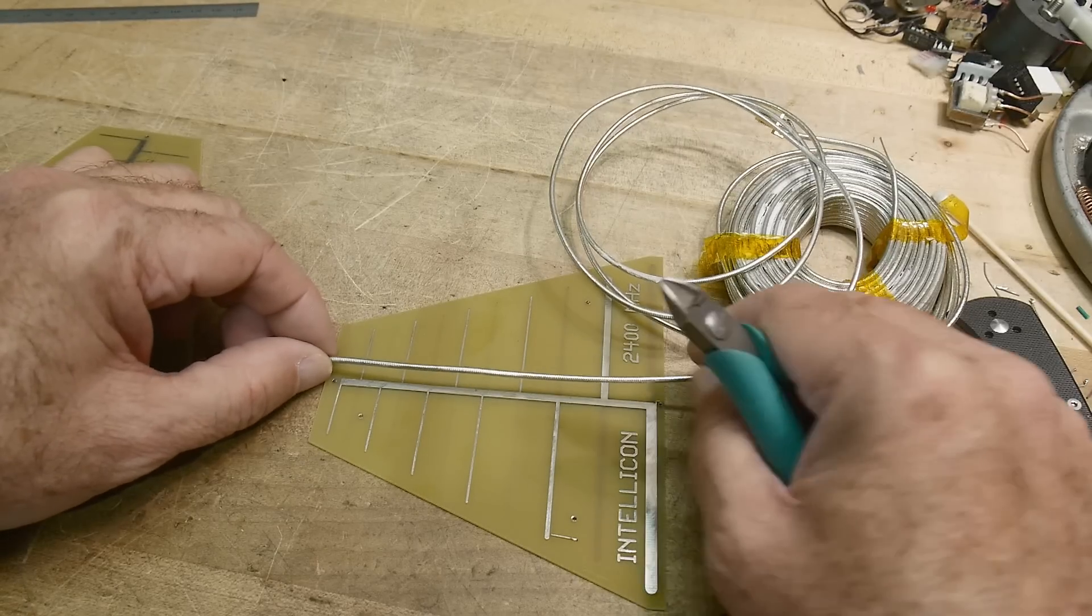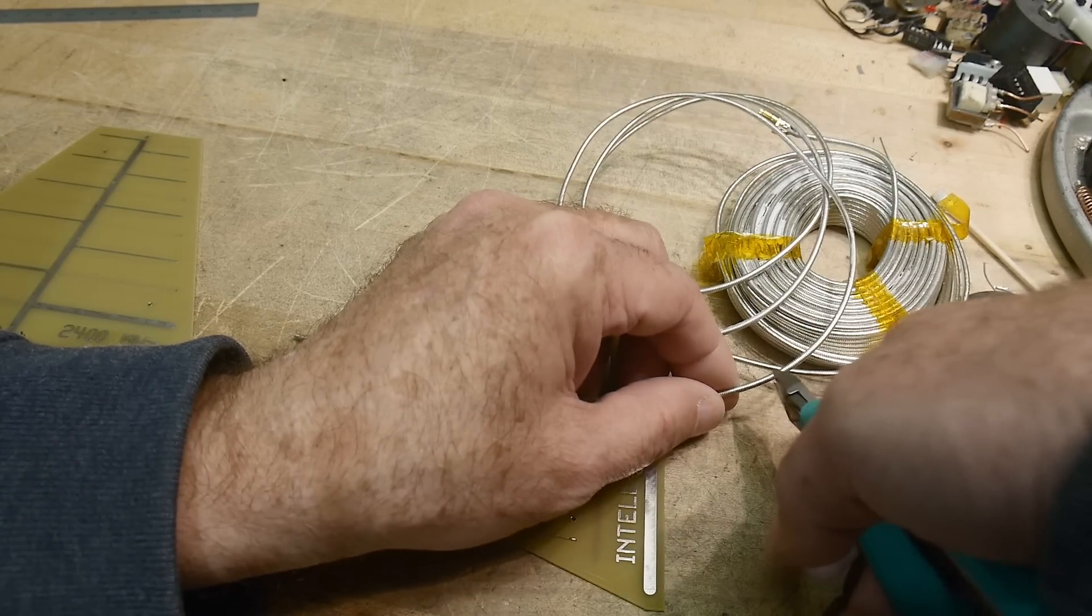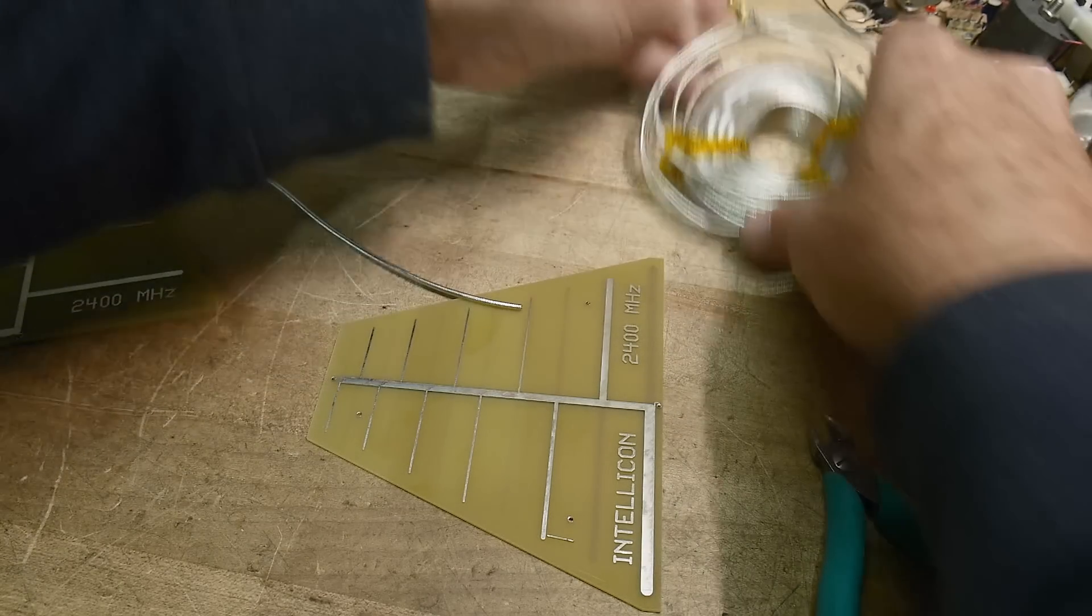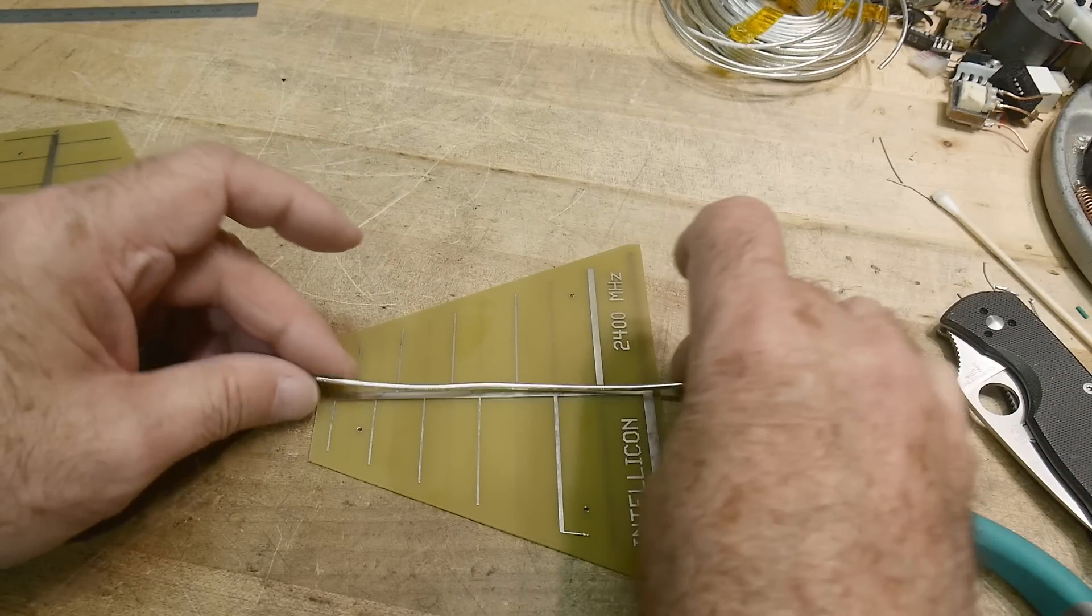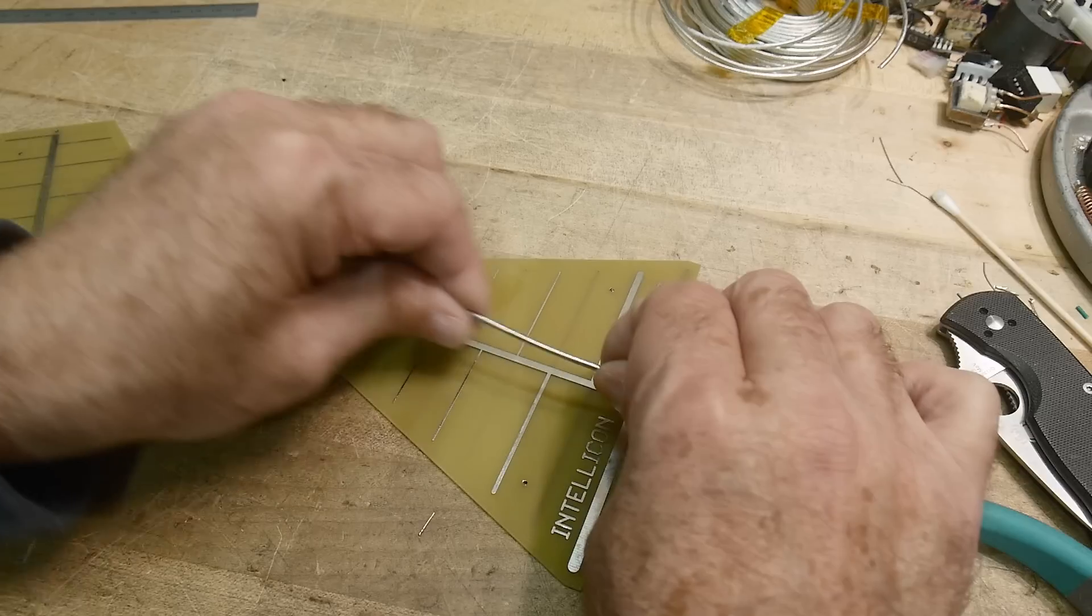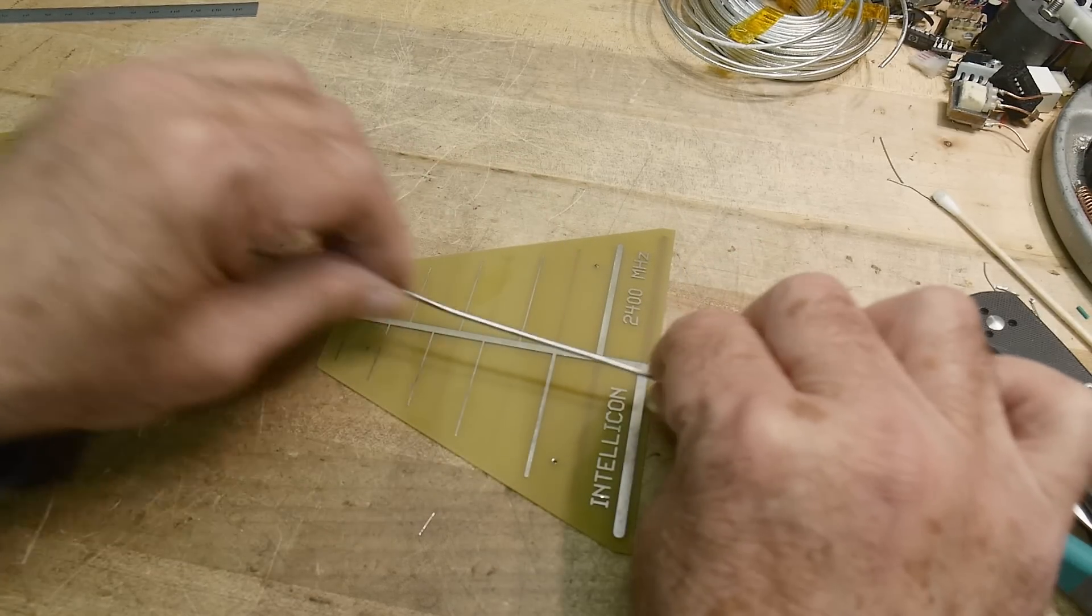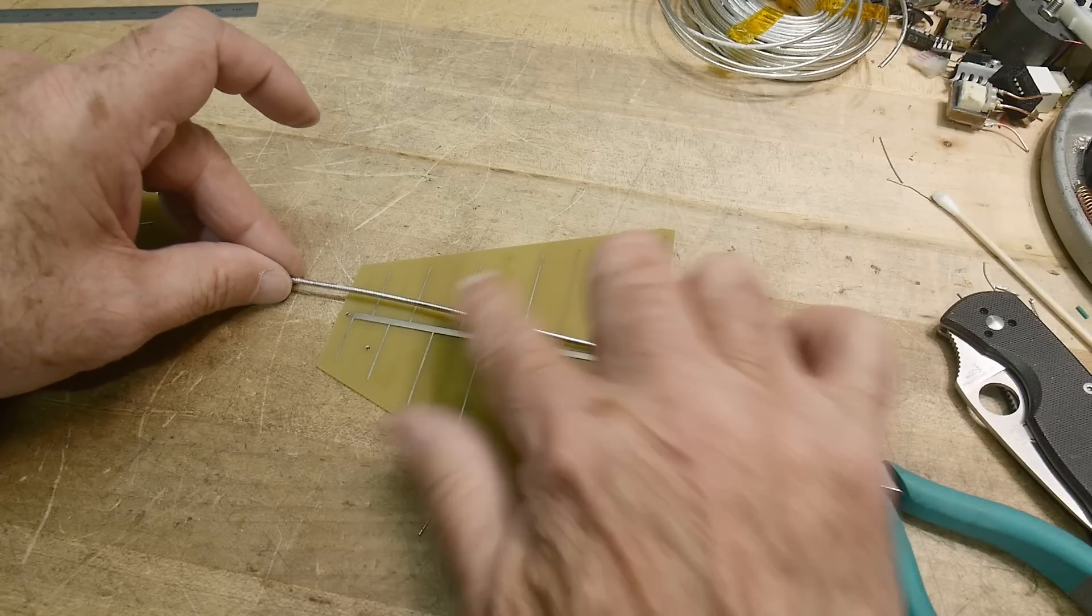This is going to need about that much. So just chop off more than we need. I think what we'll do is we'll put the coax, put the SMA on first and then strip it down to length.